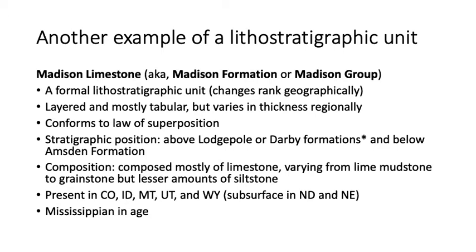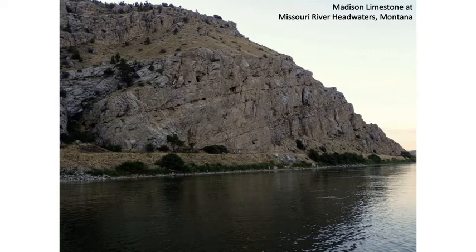A photograph shows the Missouri River at Three Forks with the Madison Limestone cropping out above a railroad. The limestones are slightly inclined. This is very near the type area for the Madison Limestone. Every formal stratigraphic unit has a type area and a type section — the type area is close to where the type section or stratotype is located.